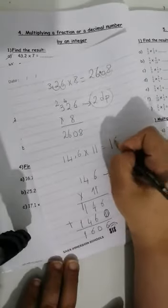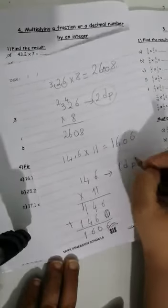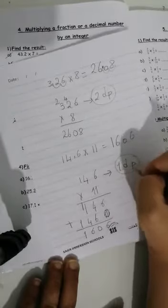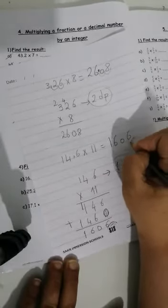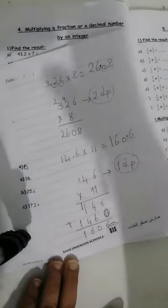So my answer here is 1, 6, 0, 6. Don't forget this. 1 decimal place. I'm going from the back. Put the point here. 160.6.